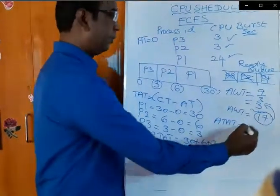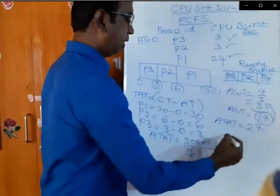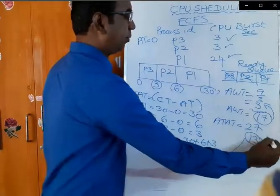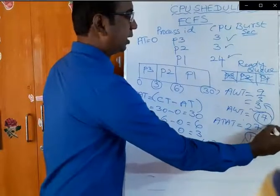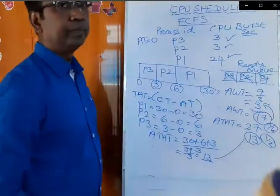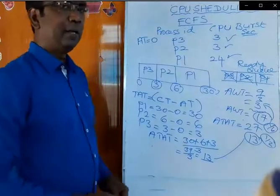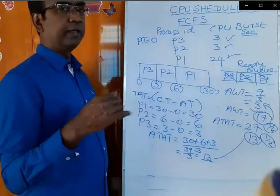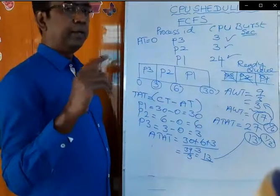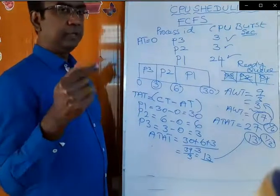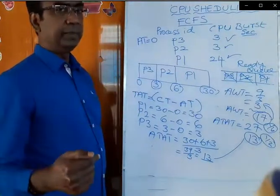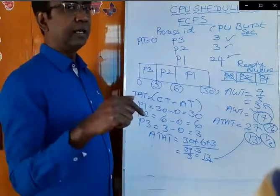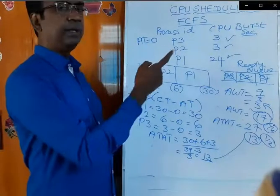Comparatively, the average turnaround time for the previous example was 27, and for this example it is 13 — almost half. This is the same example but the arrival order of processes in the ready queue is different. In the first example, P1 with CPU burst time 24 arrives first, then P2 with 3, then P3. In this example, the same processes arrive in different order: first P3, then P2, then P1.